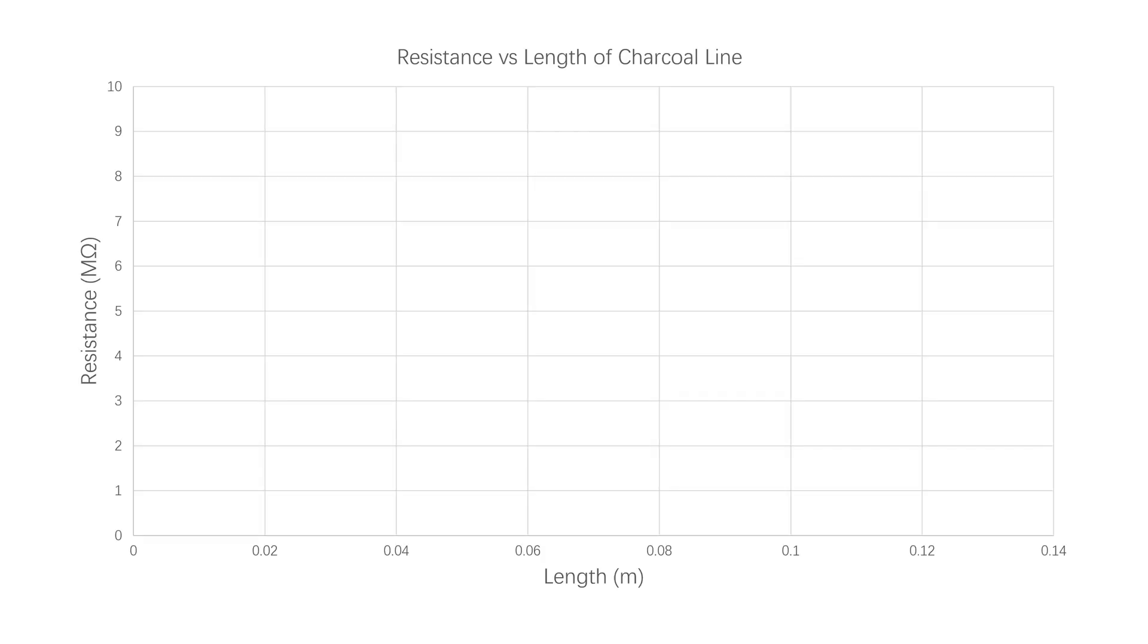By testing charcoal lines, we can see that the electrical resistance of drawn lines do in fact scale linearly with length, and that the density of carbon in the line is a critical factor that influences its conductivity.